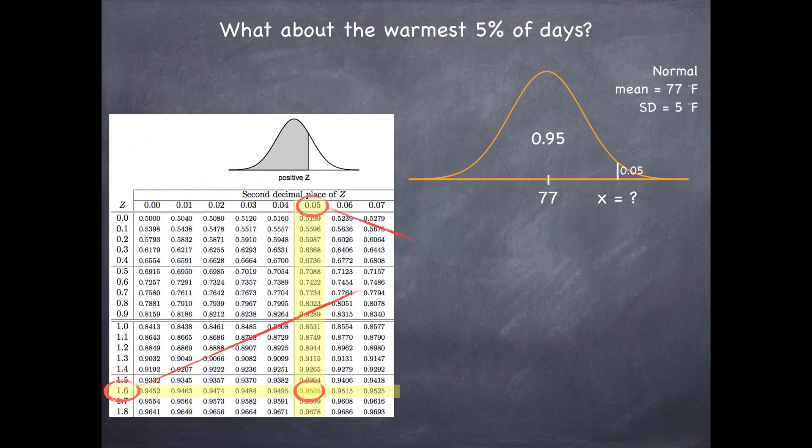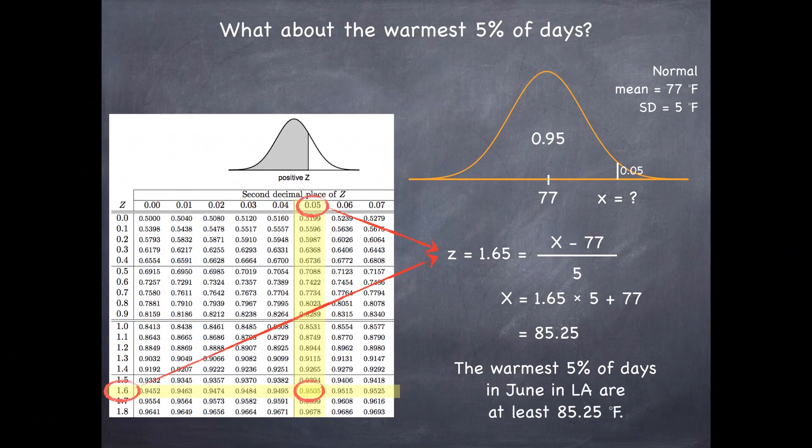Makes sense that it's positive because we're above the mean. And once again write our equation: observation minus mean divided by standard deviation. We know everything but the observation. We can rearrange things a bit and solve for x. The warmest five percent of the days in June in LA are at least 85.25 degrees Fahrenheit.